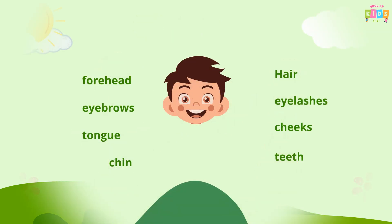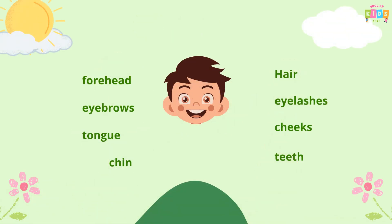There are also many other parts on our head like forehead, cheeks, eyebrows, eyelashes, teeth, tongue, chin, and hair.